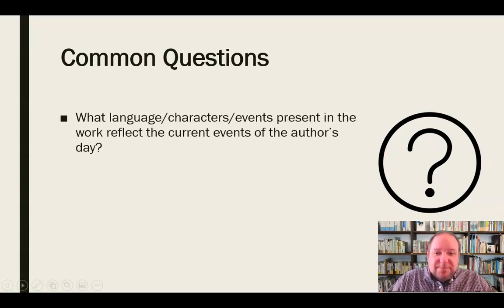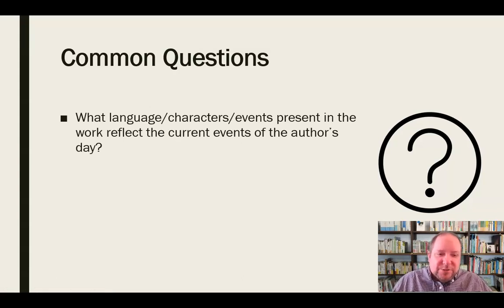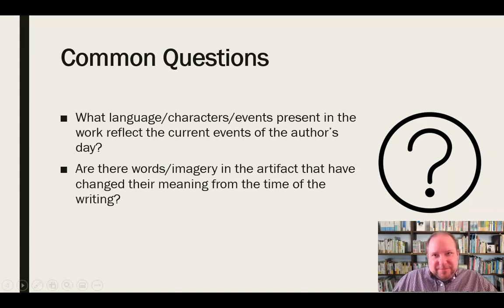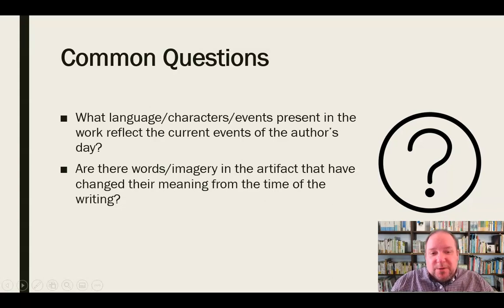Some common questions you encounter in New Historicism: First, what language, characters, or events present in the work reflect the current events of the author's day? Trying to understand the context in which the artifact was created and how that's present in the work. Are there words or imagery in the artifact that have changed their meaning from the time of writing or creation? For example, in the context of the Bible, the large absence of women in central roles is a product of that time, and so the artifact would be influenced by that.